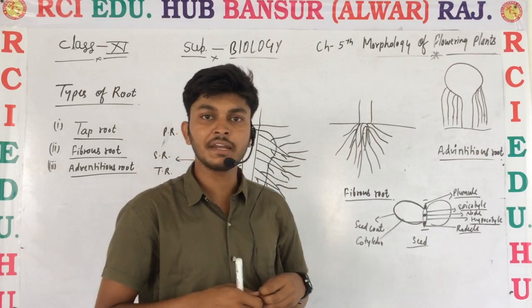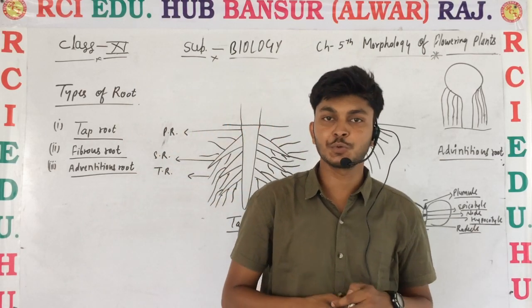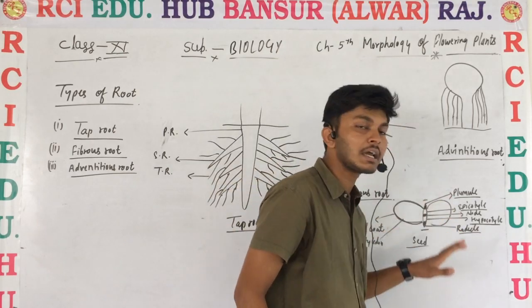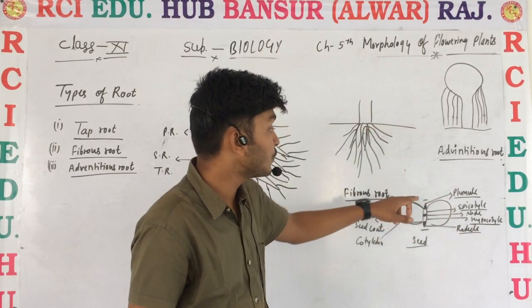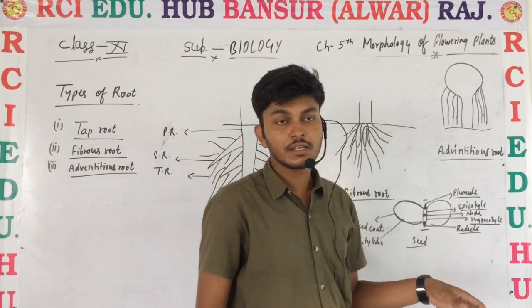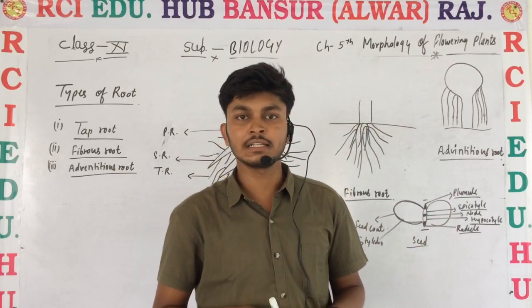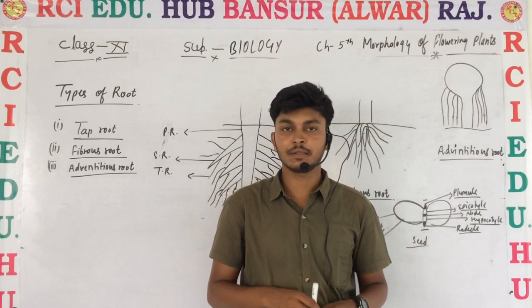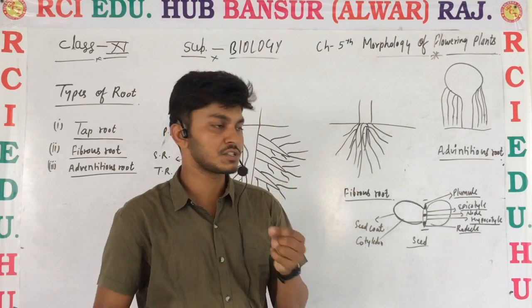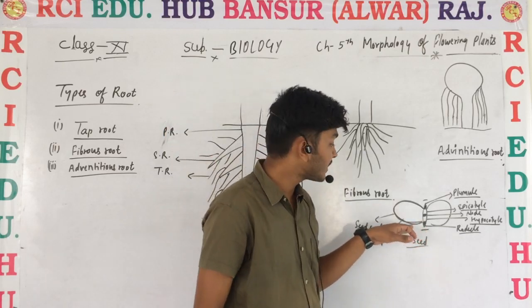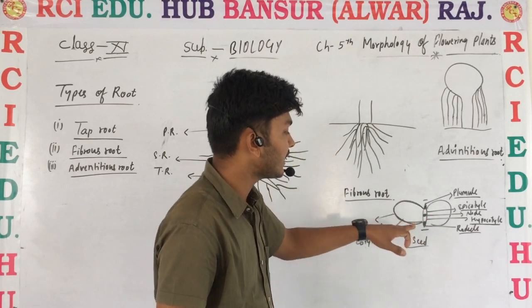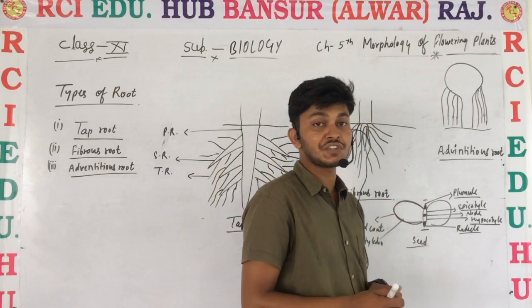What is germination? The process in which a seed develops its plumule and radical is known as germination. For example, when we put pulses in water, after putting them in water, we see that one white structure emerges — that is the plumule and radical. That process is known as germination.